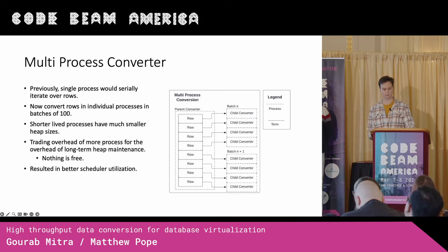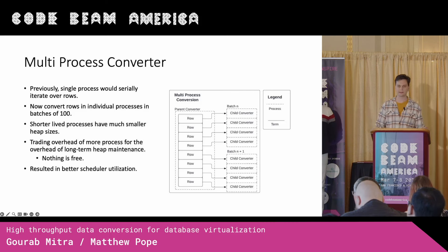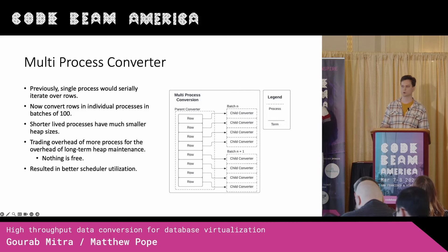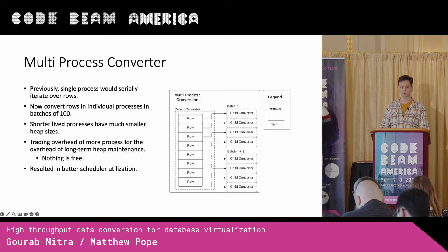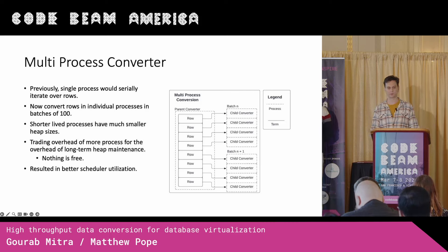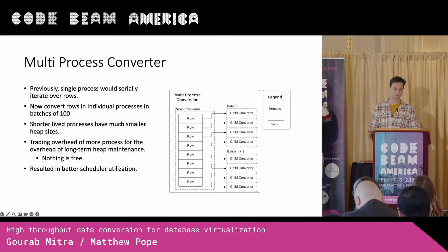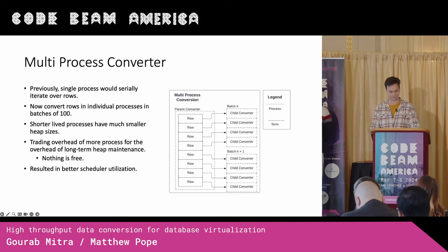We're making an obvious tradeoff though — we're trading scheduler overhead and the time it takes to spawn a process for long-term heap maintenance. This works well in our environment because we had so many resources available to us. It might not be a good general solution to spawn this many processes at once, but it works quite well in our scenario.